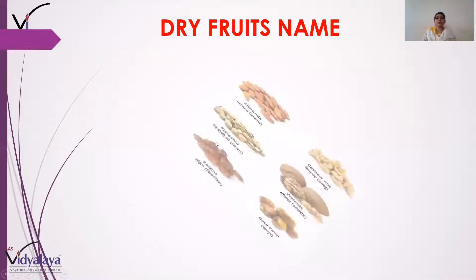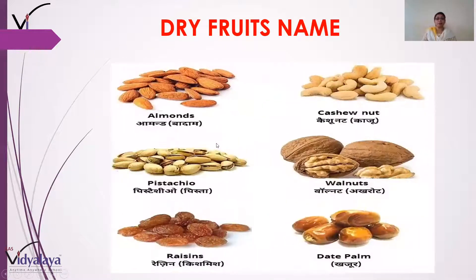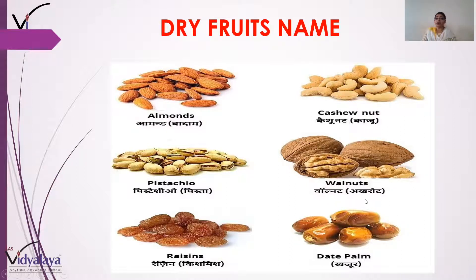Aap dekhein kuch dry fruits ke naam jaanpe — dry fruits hain yaani sukhe meve. Jaise ki badam ko almonds bolte hain. Pista ko pistachio bolte hain. Raisin, yaani kishmish — kishmish ko raisins bolte hain. Cashew nut, yaani kaju. Walnut, yaani akhrot. Aur isi tarah khajur ko date palm is naam se jana jata hai.